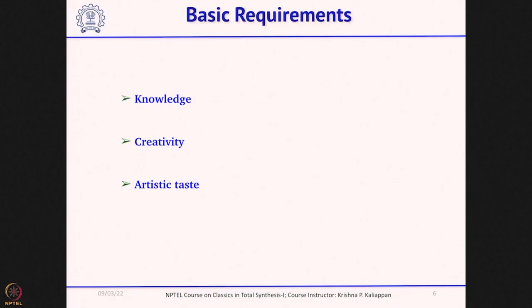The third component is artistic taste, which is also very important. When you read a particular journal volume, there may be several total syntheses reported in that issue. Not all syntheses will you remember. After going through all the syntheses, only a few will linger in your mind - how did they do it, how did they think, it is so fantastic. That is because it is not just about synthesis - it is how they thought about it, how they constructed the molecule, how they constructed a very important strategic bond. You have to have artistic taste to think about the synthesis of a complex molecule in a simpler way.